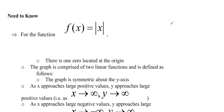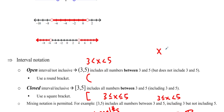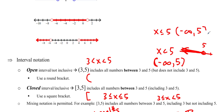For one-sided intervals like x less than 5, in interval notation we write negative infinity to 5 with open brackets: (−∞, 5). Both are open because you can't touch infinity, and 5 is not included. If we wanted x less than or equal to 5, we'd write (−∞, 5] with a closed bracket at 5. Always put the lower number first.